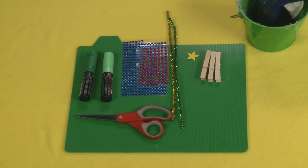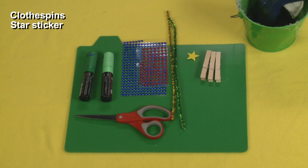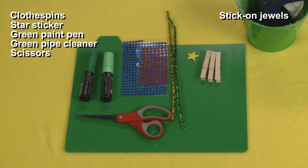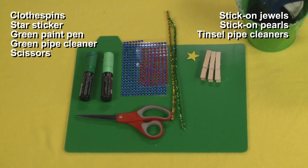For this project you will need clothespins, star sticker, green paint pens, green pipe cleaner, scissors, stick-on jewels or sequins, stick-on pearls or sequins, silver or gold tinsel pipe cleaners, and a glue gun.